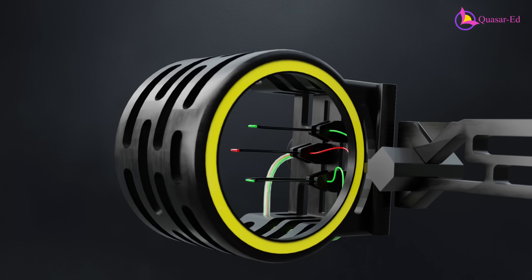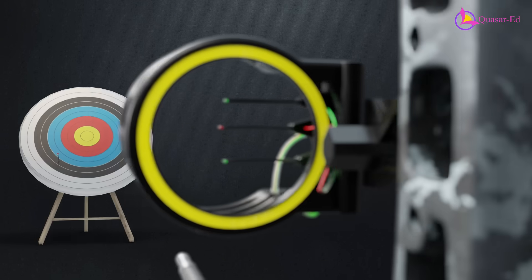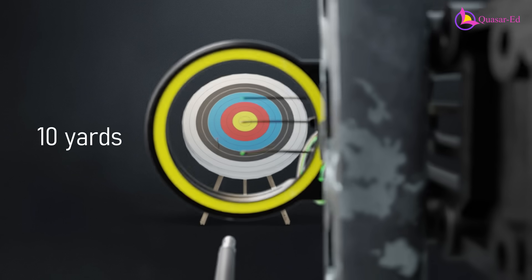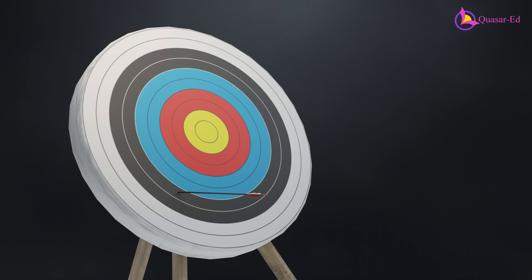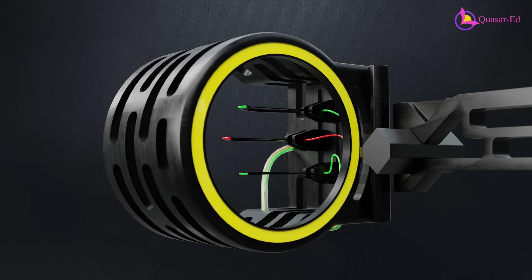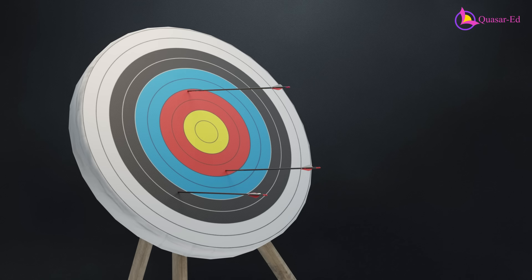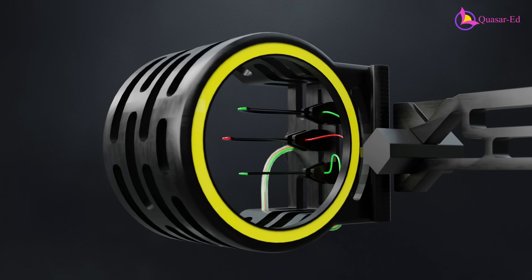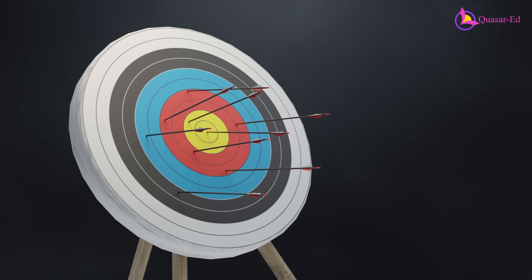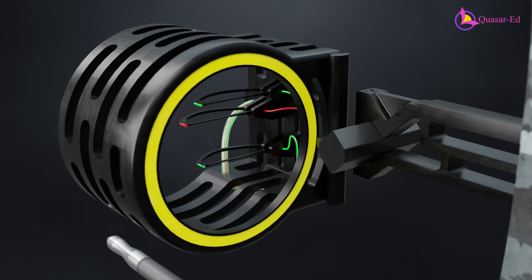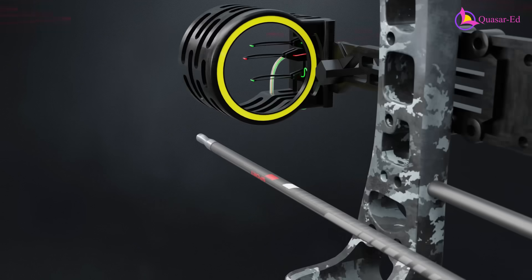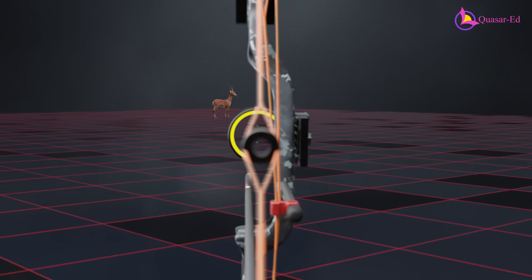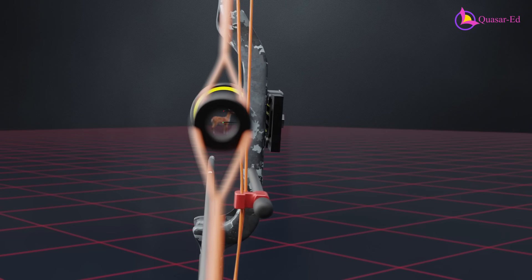Each pin is carefully calibrated. For example, if the closest target is 10 yards, the top pin is used. If the arrow lands below the mark, the pin is adjusted downward. And if it lands above, the pin is moved upward and keeps adjusting until it hits the exact spot. Left and right deviations are corrected by adjusting the sight accordingly. With proper distance estimation, using sight pins ensures consistent accuracy when shooting.